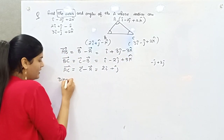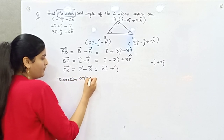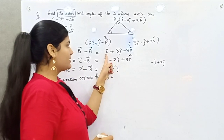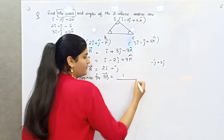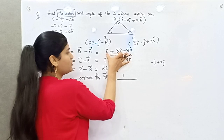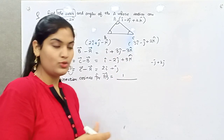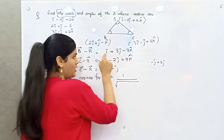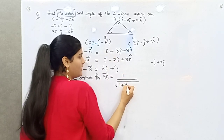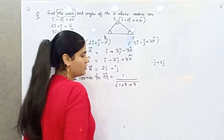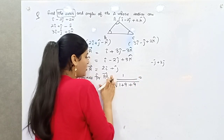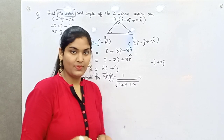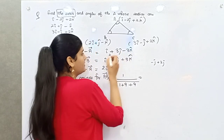To find direction cosines for AB: the coefficient of the i vector is 1. To find the magnitude, take the square root of the sum of squares of the components: 1² + 3² + (−3)² = 1 + 9 + 9 = 19. So the magnitude of AB is root 19.